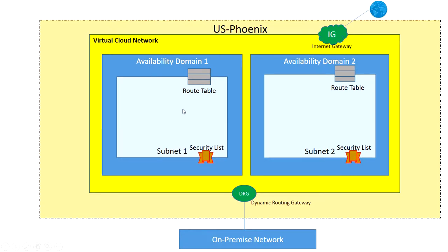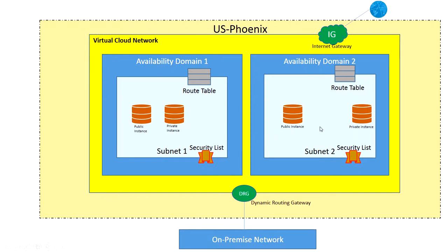Under this availability domain and subnet, you create instances. There are two kinds. When you create an instance in OCI, it will give you a public IP address as well as a private IP address. It is up to you whether you want a public IP address or not. A public IP address is required if you want to connect to your instance through the internet gateway. If not, you can just have a private IP and connect through the dynamic routing gateway.